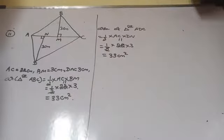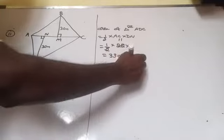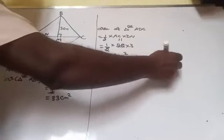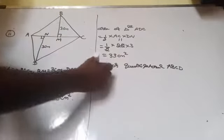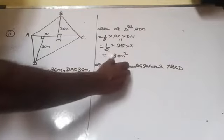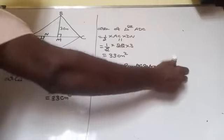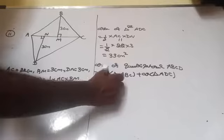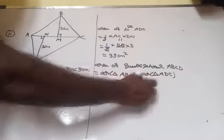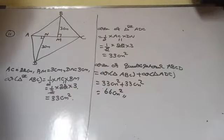Area of quadrilateral ABCD is equal to area of triangle ABC plus area of triangle ADC. Area of triangle ABC is 33 cm² and ADC is also 33 cm². Therefore, area of quadrilateral ABCD is 66 cm².